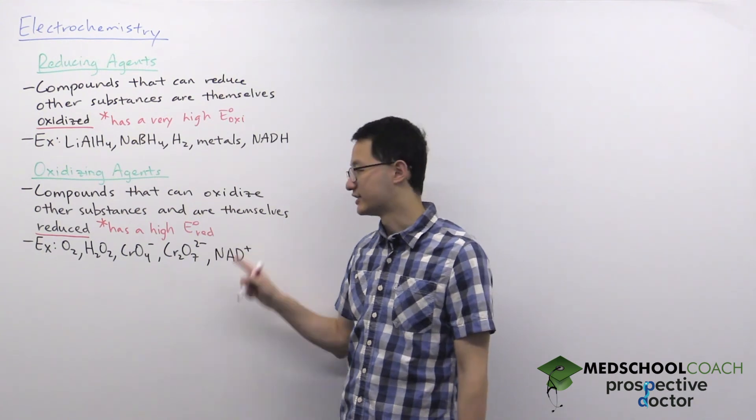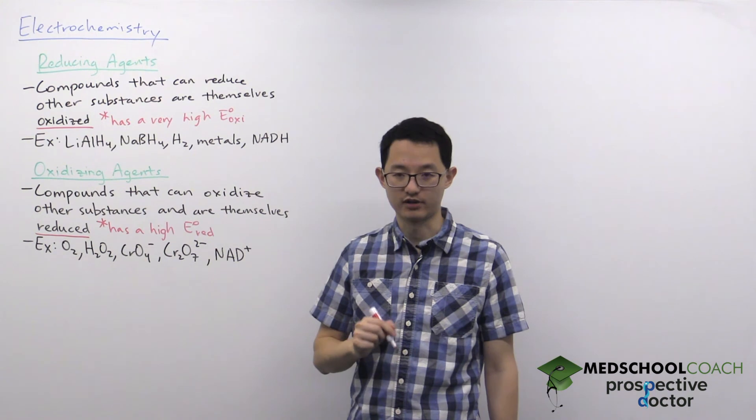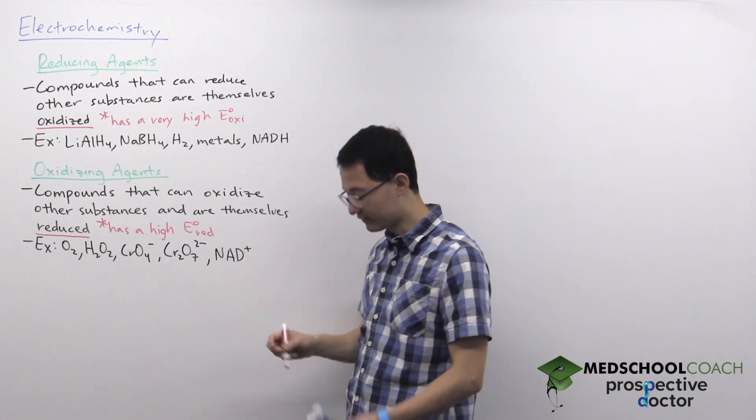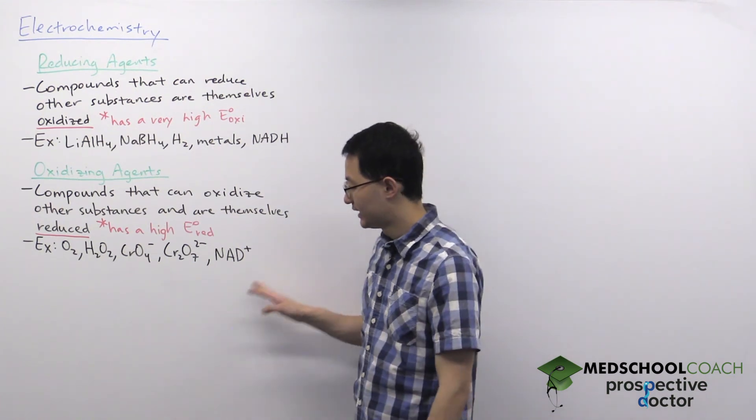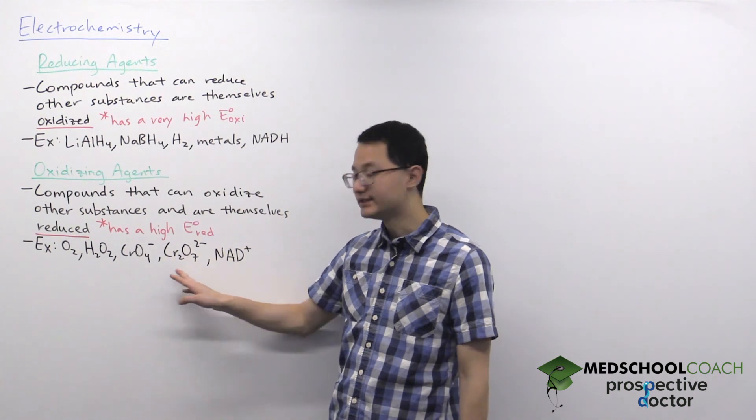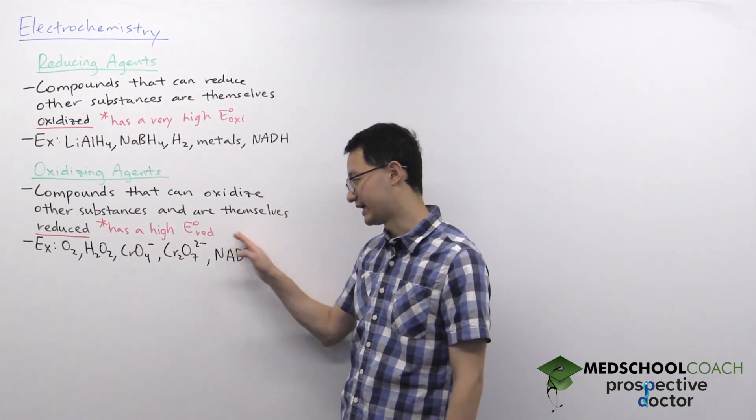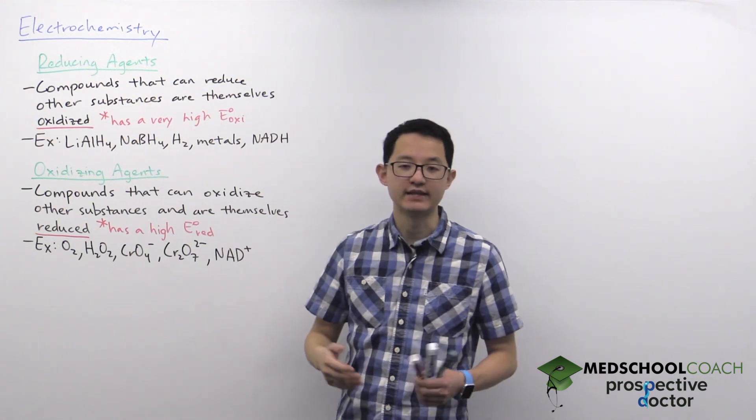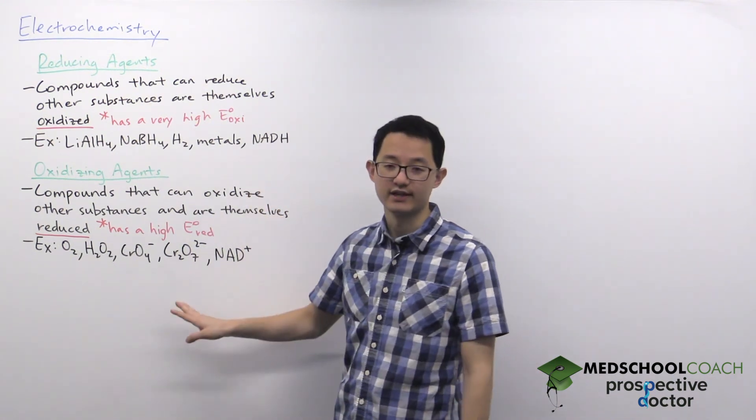Here we have some of the common oxidizing agents you want to be familiar with for the MCAT: oxygen, hydrogen peroxide, chromate, dichromate, and of course the ones important in biochemistry - NAD plus, FAD, NADP plus. So that's reducing agents and oxidizing agents.